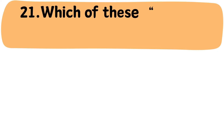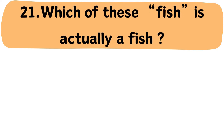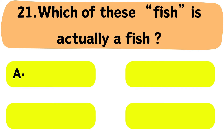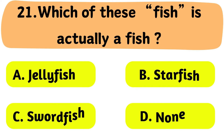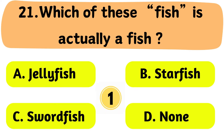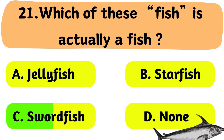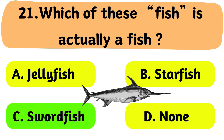Question No. 21: Which of these fish is actually a fish? A. Jellyfish. B. Starfish. C. Swordfish. D. None. The correct answer is Option C: Swordfish.